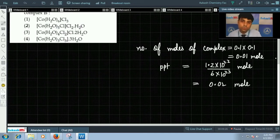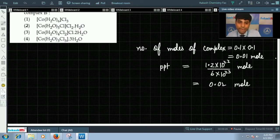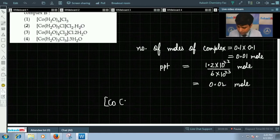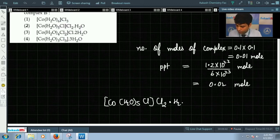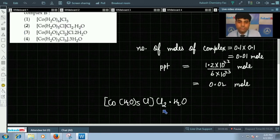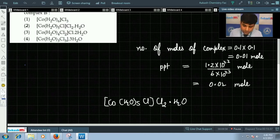So here we can see 0.01 mole of complex gives you 0.02 mole of precipitate, that means 2 chloride ions are outside the coordination sphere. So the formula of complex will be [Co(H2O)5Cl]Cl2·H2O, where 2 chloride ions are outside the coordination sphere. Hence it will precipitate 2 moles of AgCl. So the correct answer for this question is option 2.